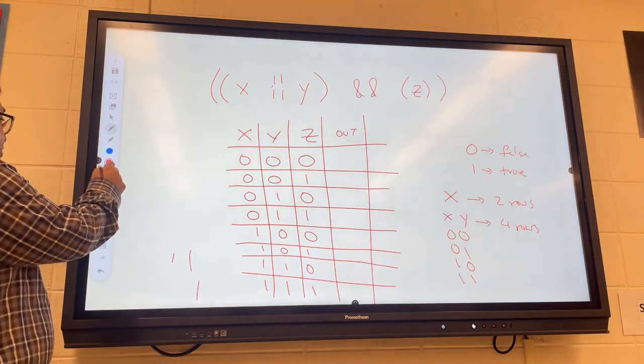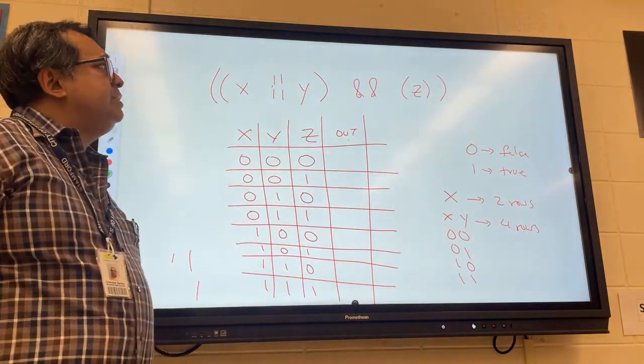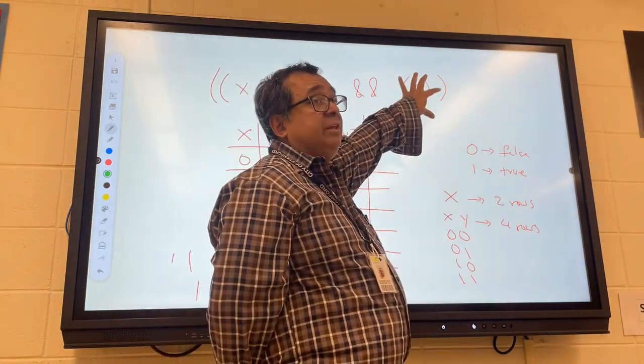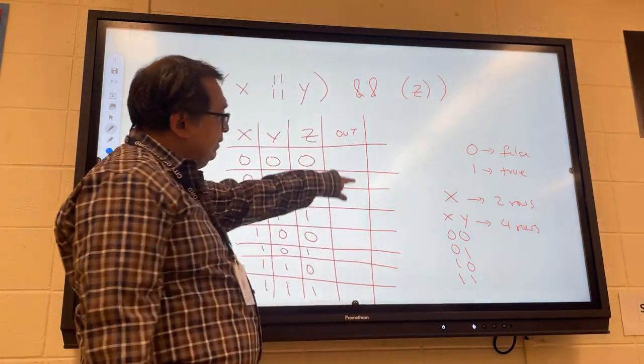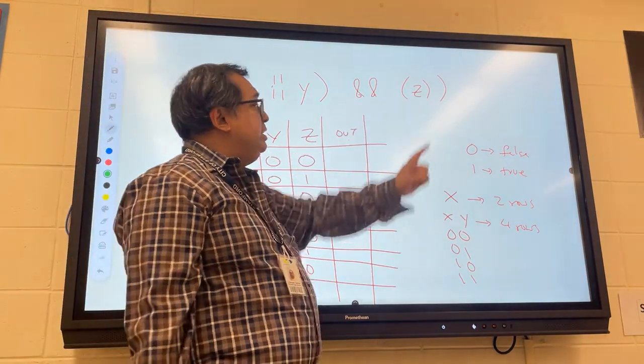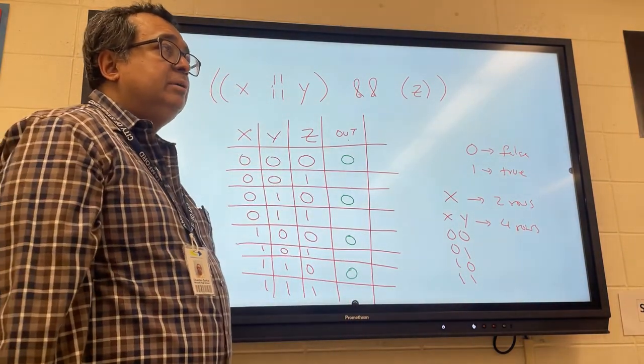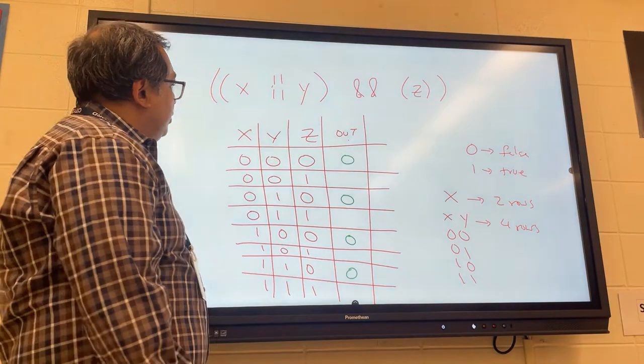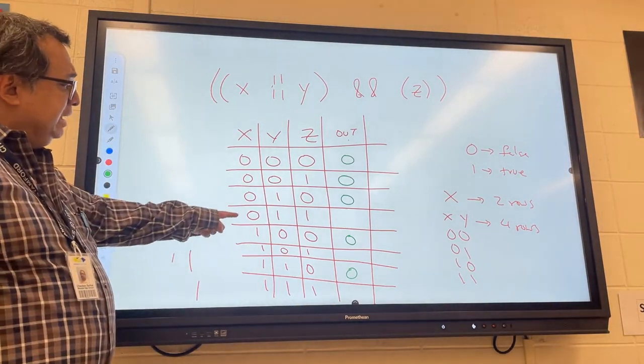Now what we want to do is we want to write what the outputs are going to be. Looking at this expression right here, what can we say about the outputs when the z value is false? So there's an AND here, miss. So if this part is false of the end, what will the whole expression be? It will be false. So in terms of filling this table out, we're going to just kind of cheat a little bit and put in zeros for all the ones where the z is already zero. So we'll just put in here and here and here and here. That'll make our work a little bit faster. What can we say if they're both zero? Then the whole thing will be false, right? So that will be this one. Are there any other cases in here where x and y are both zero?